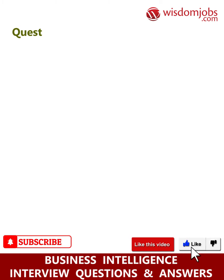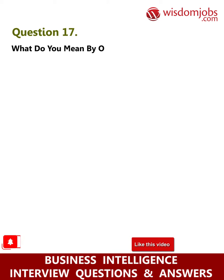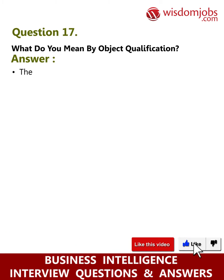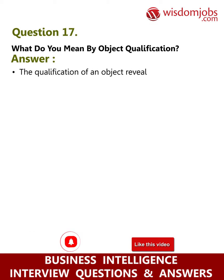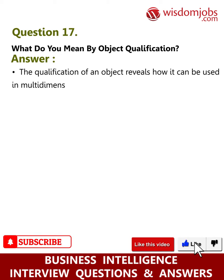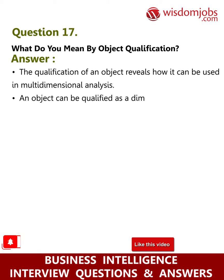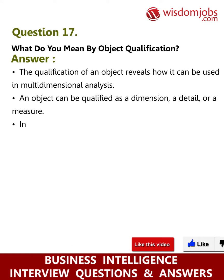Question 17: What do you mean by object qualification? Answer: The qualification of an object reveals how it can be used in multi-dimensional analysis. An object can be qualified as a dimension, a detail, or a measure. In the universe pane, the symbol beside each object indicates its qualification.